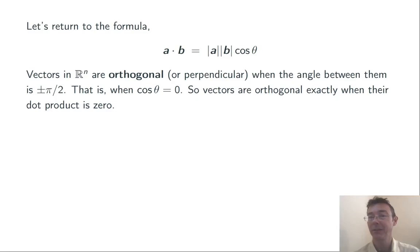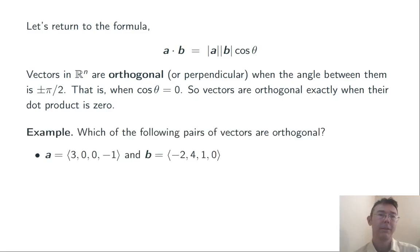Let's do a couple of examples using that. Which of these following pairs of vectors are orthogonal? So here's two that we saw earlier: ⟨3, 0, 0, -1⟩ and ⟨-2, 4, 1, 0⟩. We take their dot product. We get negative 6. We saw that before. So these vectors are not orthogonal.